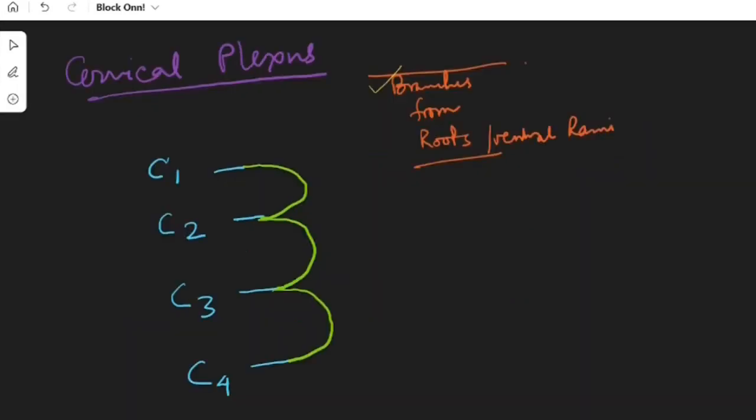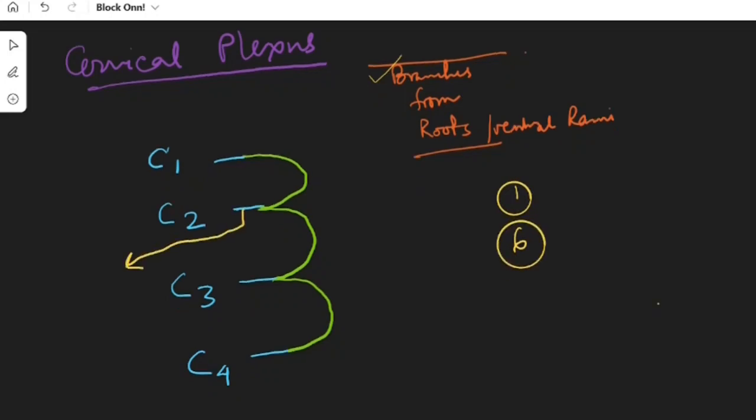So coming to the branches from the roots or the ventral rami, here we have one sensory nerve and six motor nerves. So the sensory one is the lesser occipital nerve from C2. The motor nerves include two from C1 that is geniohyoid and thyrohyoid which I have already discussed during ansa cervicalis.